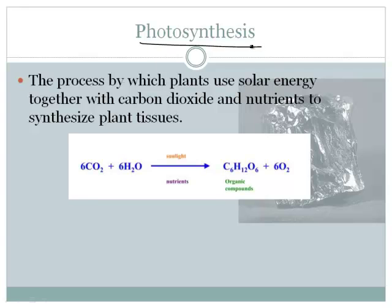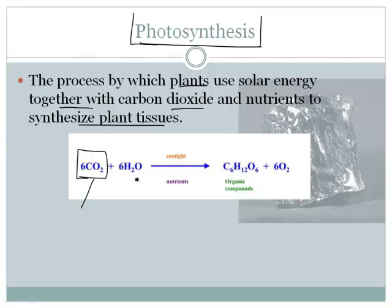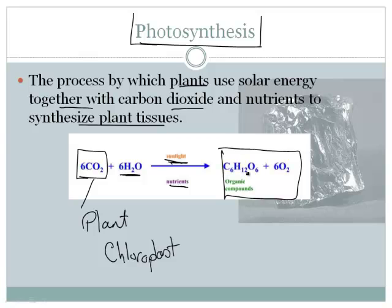So how does this all work? In the photosynthetic process — if you're in biology you'll understand this well — plants use solar energy together with carbon dioxide and nutrients to synthesize plant tissues. Carbon dioxide in the air reacts with water, and this process actually happens inside the chloroplast part of the plant. Sunlight and other nutrients go in, and organic compounds come out. These organic compounds make up a leaf or whatever plant matter, and that substance can sometimes be turned into coal.